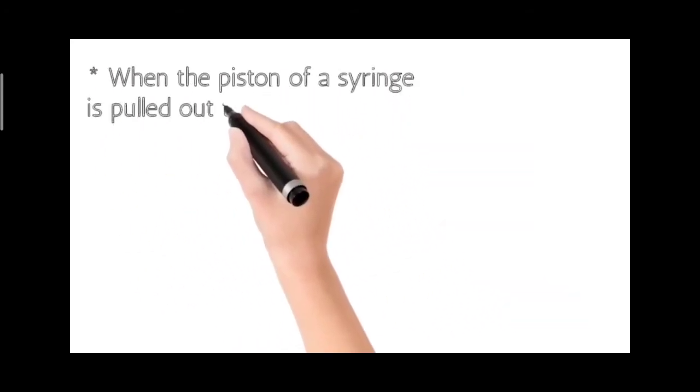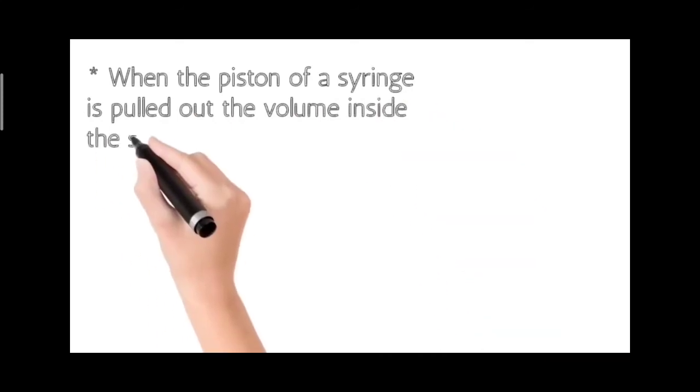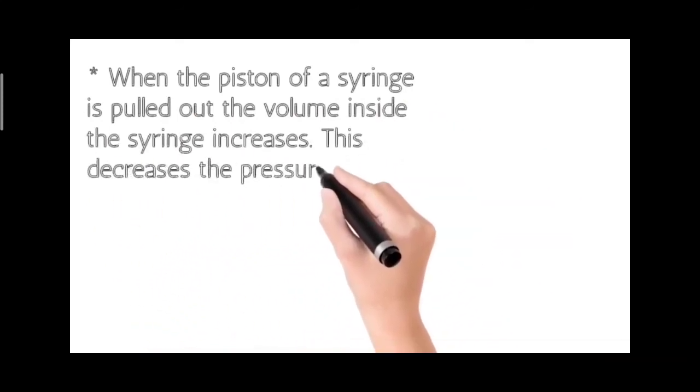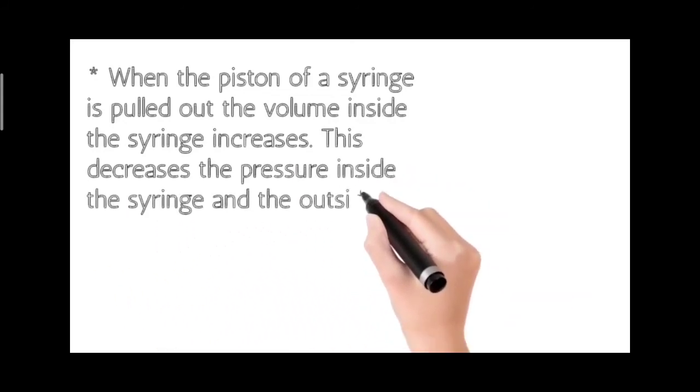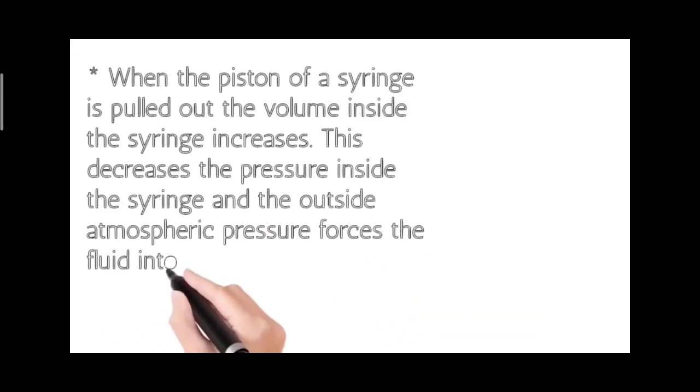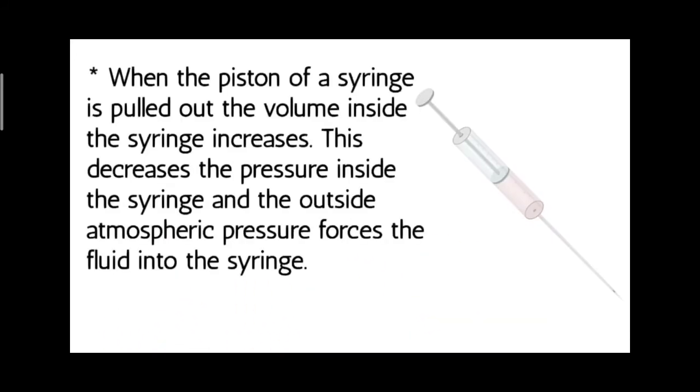When the piston of a syringe is pulled out, the volume inside the syringe increases. This decreases the pressure inside the syringe and the outside atmospheric pressure forces the fluid into the syringe.